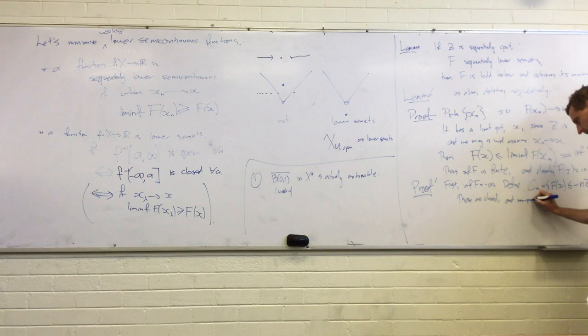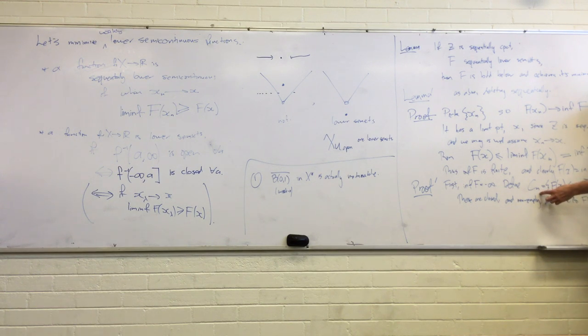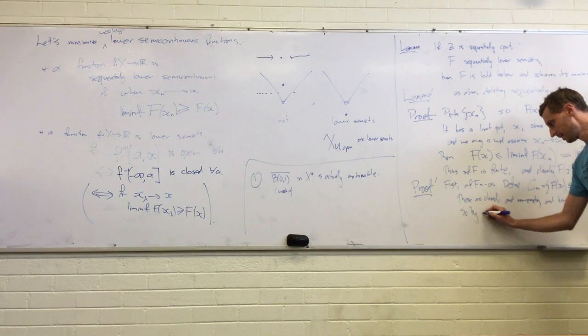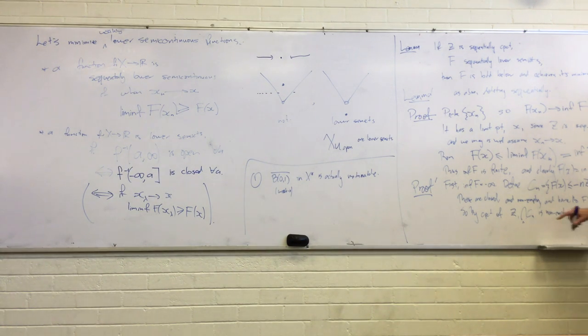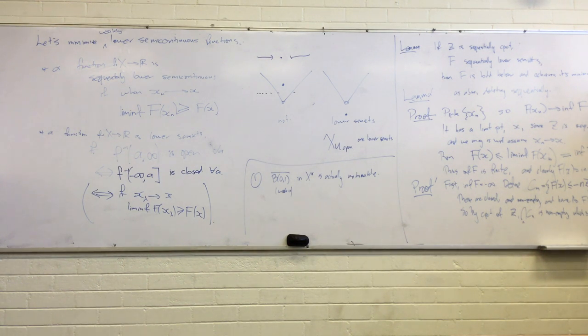So f(x) being lower semi-continuous makes Cn closed. And they're all nonempty because the infimum was negative infinity. And they easily have the finite intersection property. If you take finitely many of these Cn's, they're indexed by natural numbers. There's some largest index for Cn's you took. And the intersection of all of those Cn's is just whatever that smallest one was. These are just an increasing sequence. So the fact that finite subsets of the natural numbers have a largest element means they have the finite intersection property. So, by compactness of Z, the intersection of all of the Cn's is nonempty.